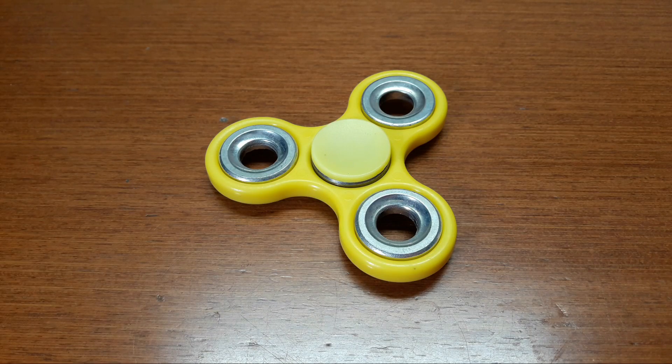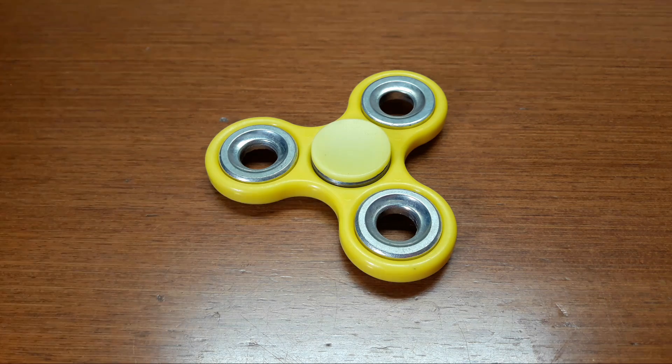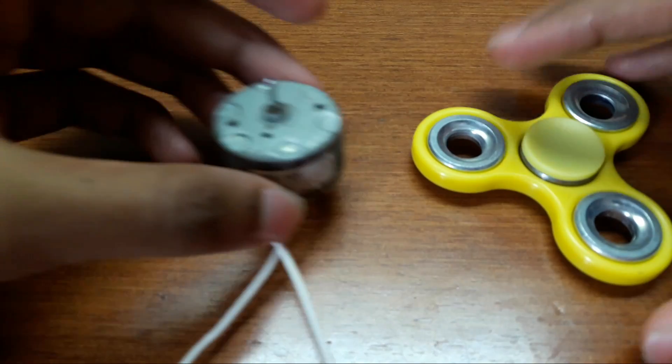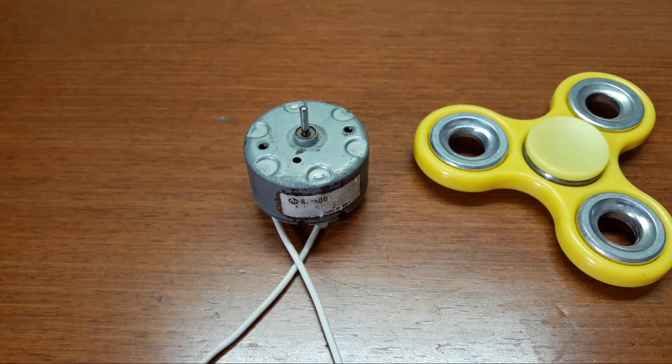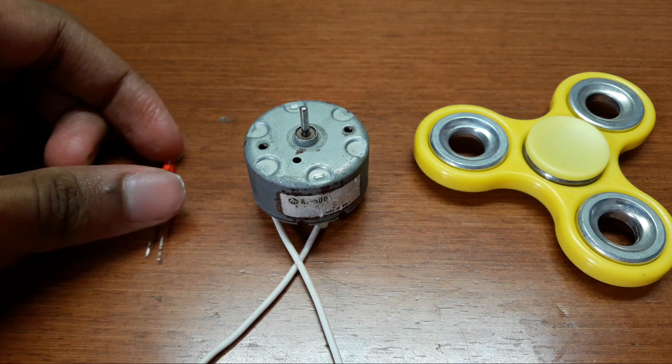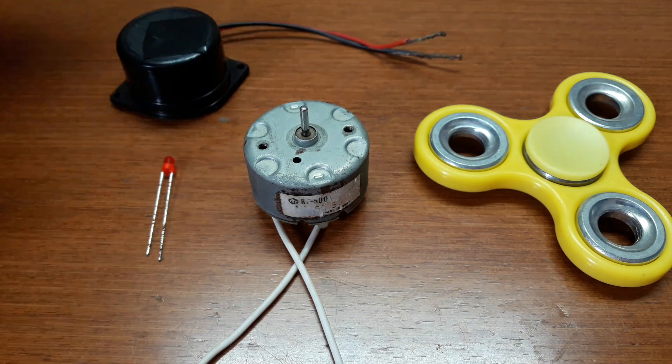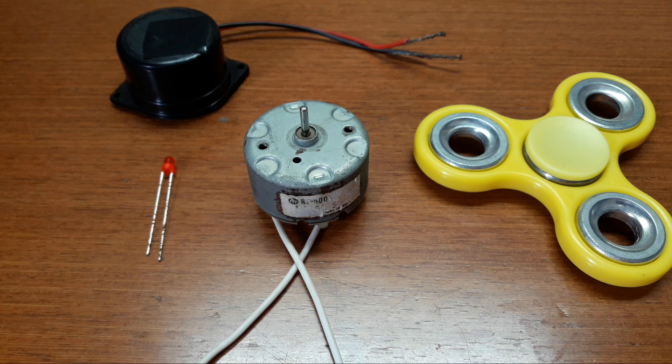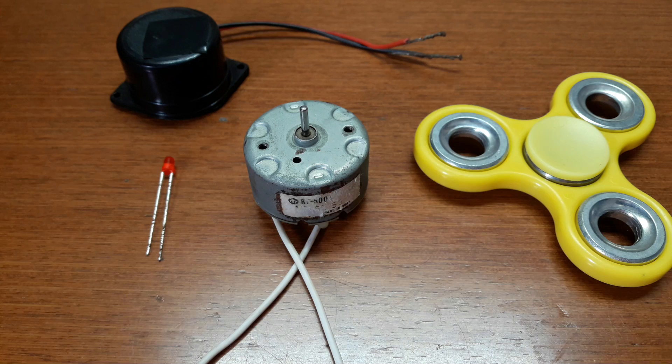To produce some electricity from a fidget spinner, you need a fidget spinner, a DC motor, a LED, and a buzzer. In case after completion of this circuit it does not produce enough electricity to light up the LED, then we can try it out with a buzzer.